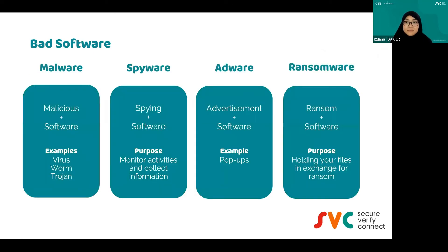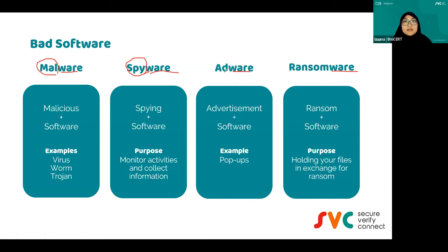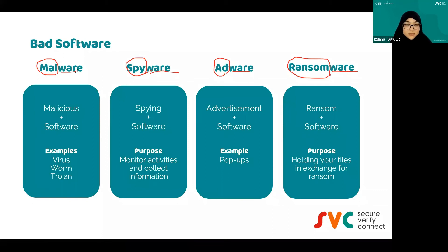There are many types of bad software. The first one is malware — short for malicious software. If you accidentally install malicious software to your devices — computer or smartphone — the intention of malware is to corrupt the computer system. Examples of malware include virus, worm, and also trojan. The difference between virus and worm: a virus requires a human to click on it, while a worm doesn't require a click — it will automatically infect your computer.